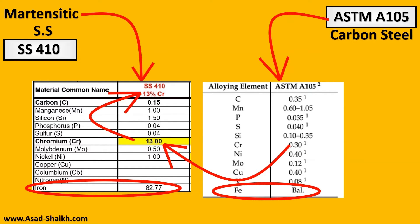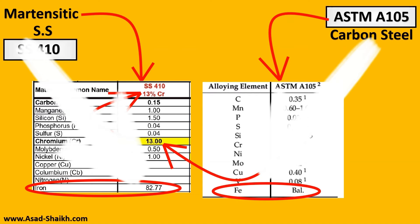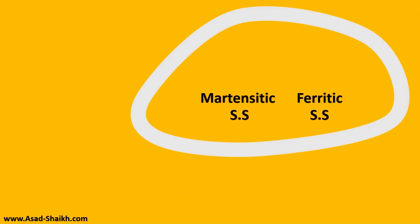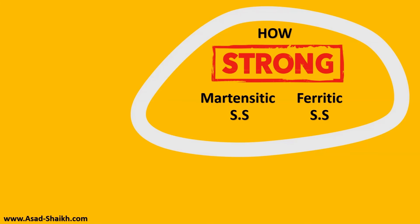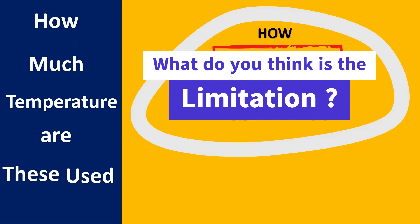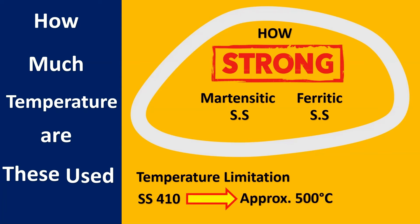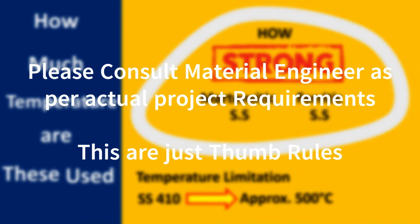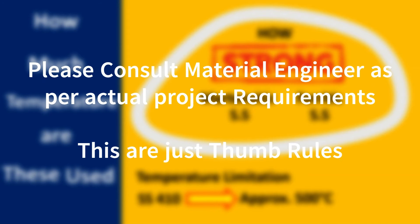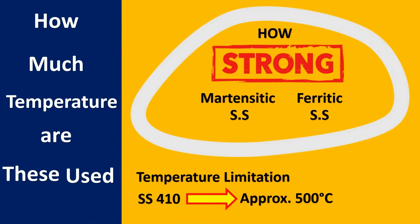Iron is still the major constituent at approximately 82.77%. One important limitation of martensitic stainless steel is temperature. For example, SS410 can be used at a maximum of around 500°C. For precise details you must consult a material engineer, but as a thumb rule it is around 500°C.